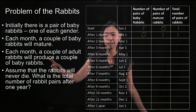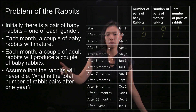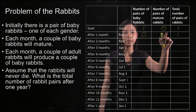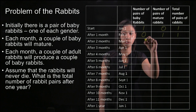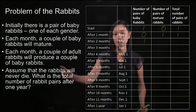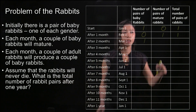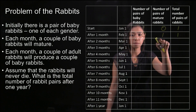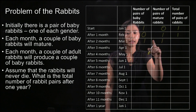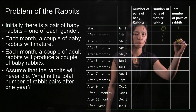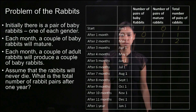Each month, a couple of mature rabbits will produce a couple of baby rabbits. This pair of mature rabbits will give birth to one pair of baby rabbits. Assuming the rabbits will never die, this pair of mature rabbits will survive into the next month. Adding up, we have two pairs of rabbits after two months.